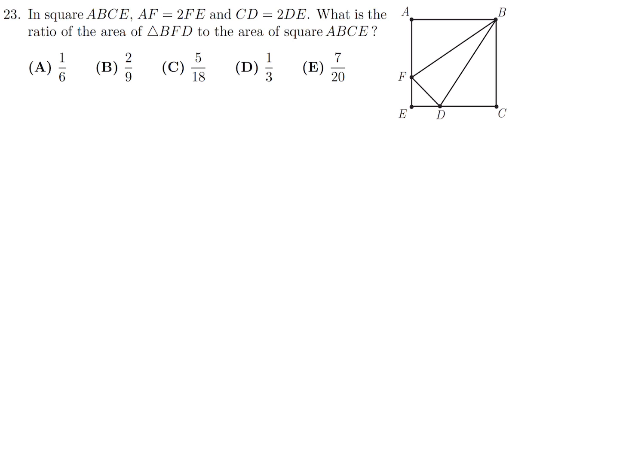In this square, ABCE, AF is equal to 2FE, CD is equal to 2DE. What is the ratio of the area of triangle BFD to the area of square ABCD? So this is X. This is 2X. They tell you that in the question. And therefore, the full side is 3X.